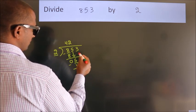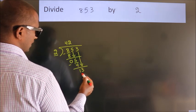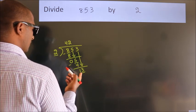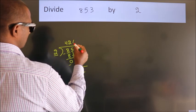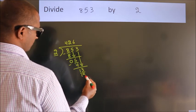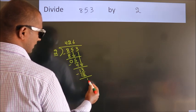After this, bring down the beside number. So 3 down. So 13. A number close to 13 in 2 table is 2 6 12. Now we subtract. We get 1.